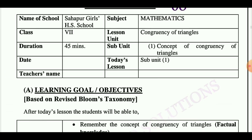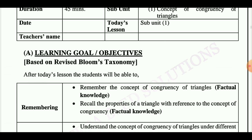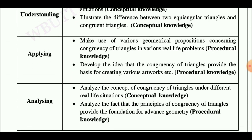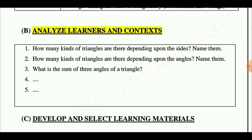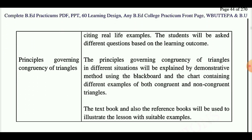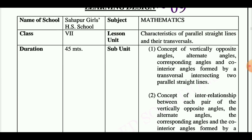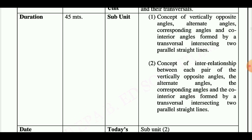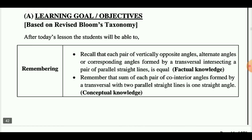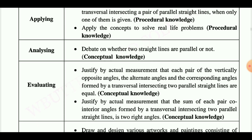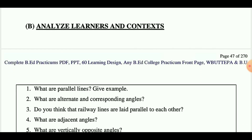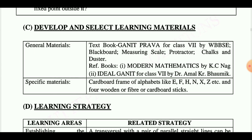Learning design number eight is taken from class seven. The concept covers the interrelationship between each pair of vertically opposite angles, alternate angles, corresponding angles, and co-interior angles formed by a transversal intersecting two parallel straight lines. Learning goals are: remembering, understanding, applying, analyzing, evaluating, creating. Next point is analyze learner and context, then develop and select learning materials and learning strategy.